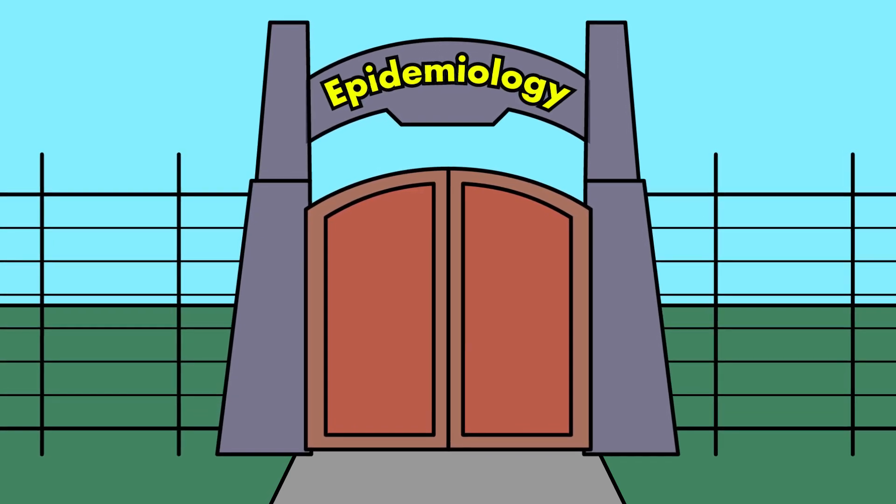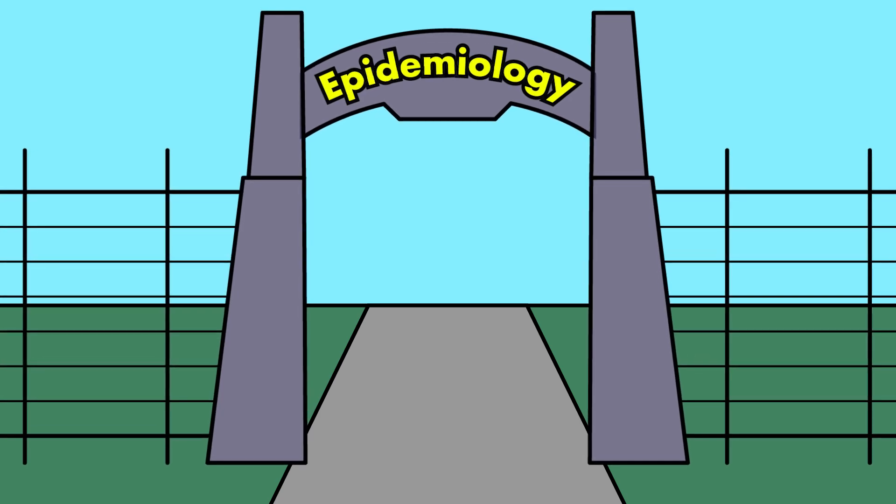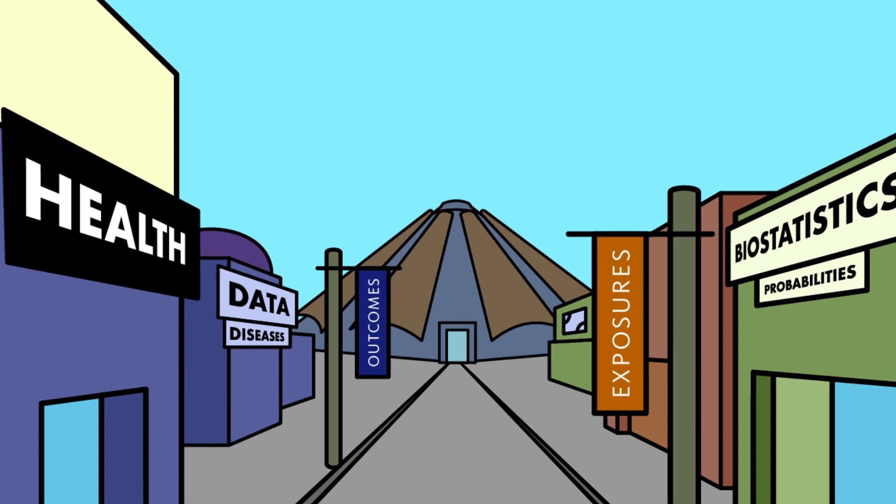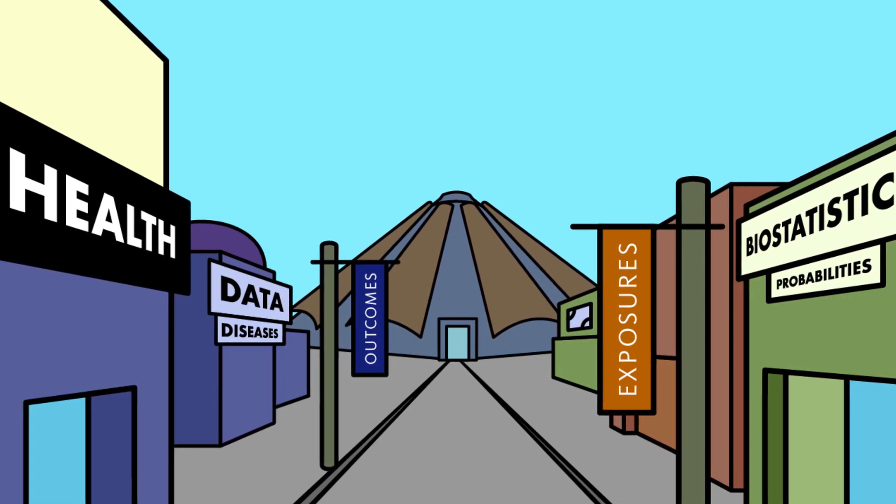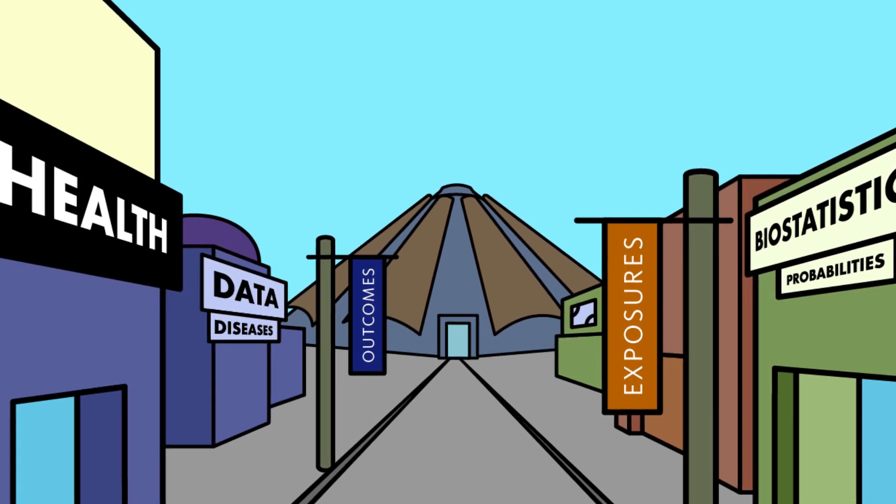A key feature of public health is epidemiology, which in basic terms is the science of how exposures affect the overall health of society. A major avenue that epidemiologists use to link exposures to outcomes or diseases is with biostatistics, which at its most basic level is the use of data and probabilities to measure the effect of one health-related factor on another.